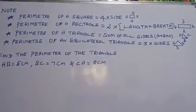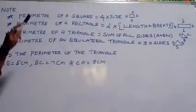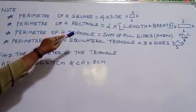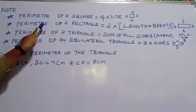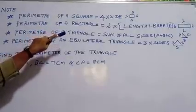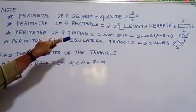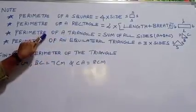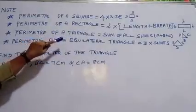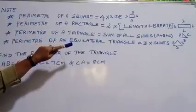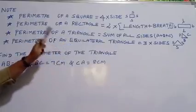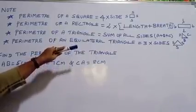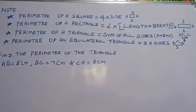I revise the formula for the perimeter. The perimeter of a square is equal to 4 times the side. The perimeter of a rectangle is equal to 2 times length plus breadth. The perimeter of a triangle is equal to the sum of all sides. The perimeter of an equilateral triangle is equal to 3 times the side.